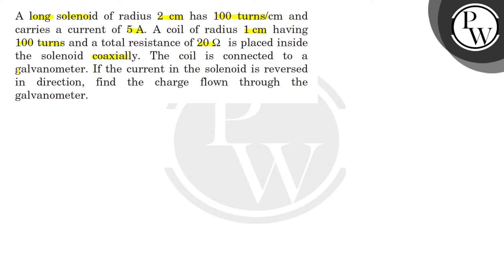The coil is connected to a galvanometer. If the current in the solenoid is reversed in direction, find the charge flown through the galvanometer.